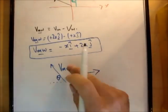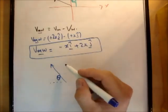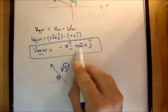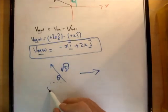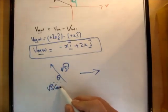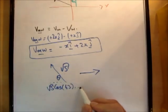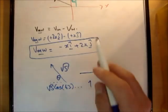So if this was theta, and the magnitude of vmw was root 5, alright, which is that's what it is here, then it's going to be, this is going to be root 5 cos of, we'll say, 63.